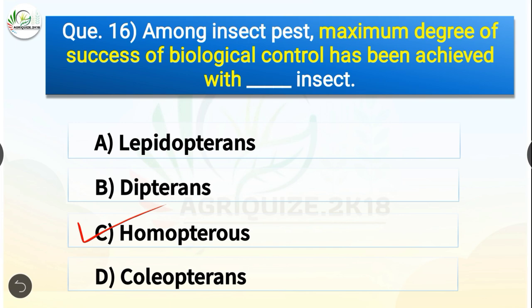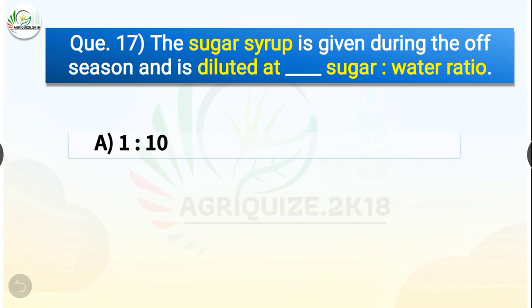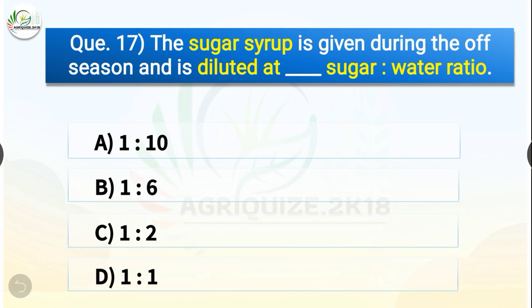Question number seventeen: The sugar syrup is given during the off-season and is diluted at dash sugar to water ratio. The options are 1:10, 1:6, 1:2, or 1:1. The correct answer is option D — 1:1. The sugar syrup is given during the off-season and is diluted at 1:1 sugar to water ratio.